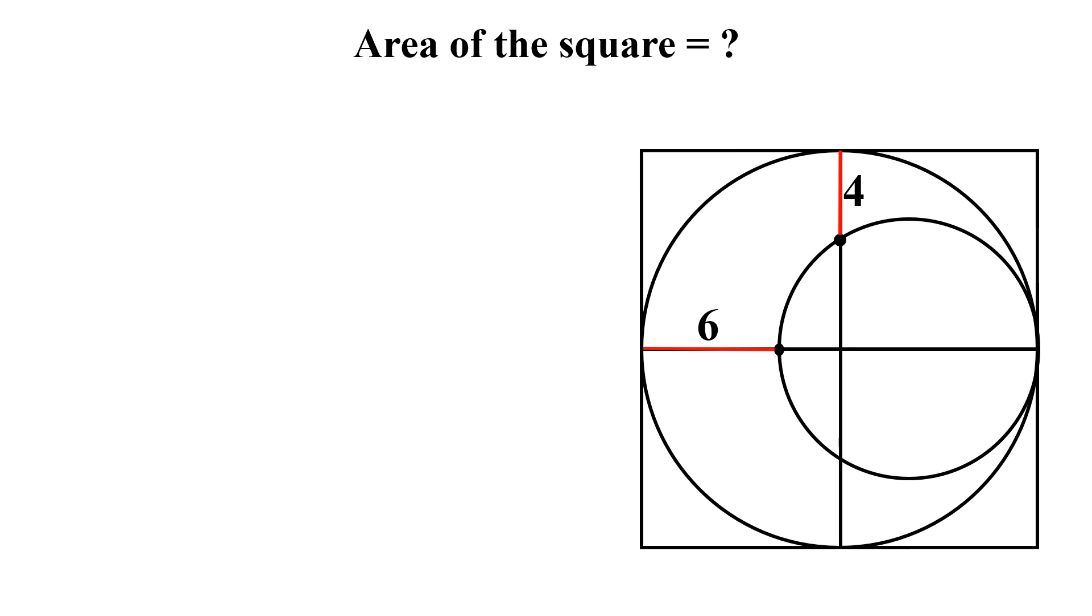Let's begin to solve the question. Let this length be x. Then the radius of the big circle will be x plus 6, and this length will be also x plus 6. If this is x plus 6, this will be x plus 2, and this length will be also x plus 2. The side of the square will be 2 times (x plus 6).